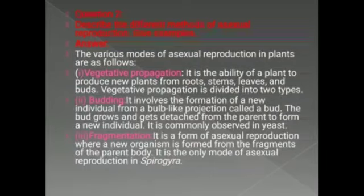Vegetative propagation means reproduction by the vegetative parts of a plant. The vegetative parts of the plant are roots, stems, leaves and buds. So vegetative propagation means it is the ability of a plant to produce new plants from roots, stems, leaves and buds. Vegetative propagation is again divided into two types.